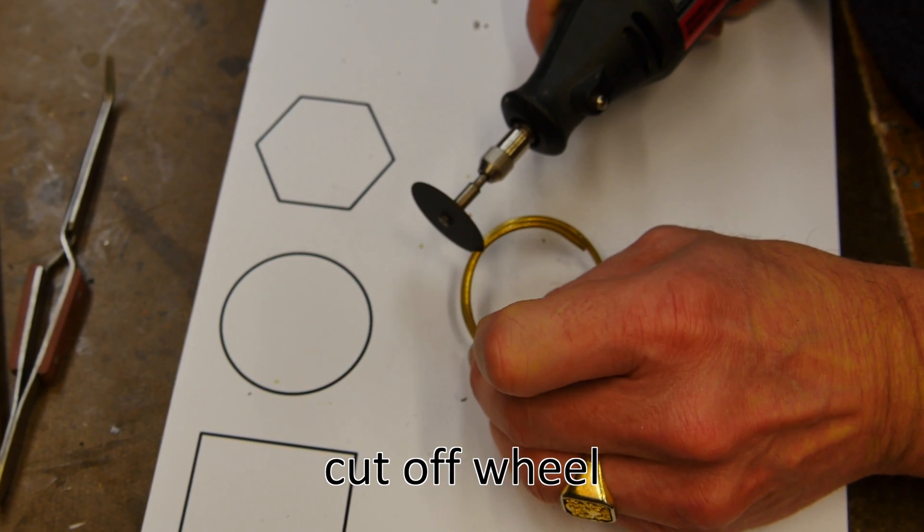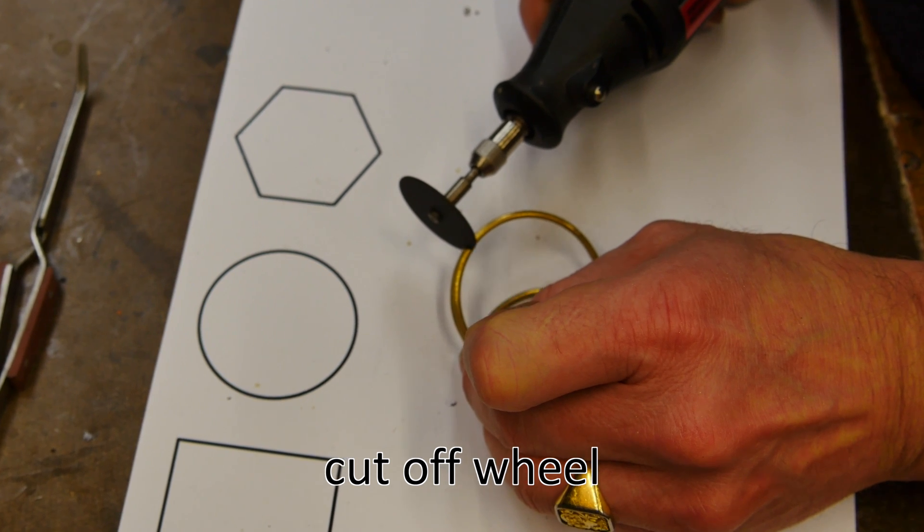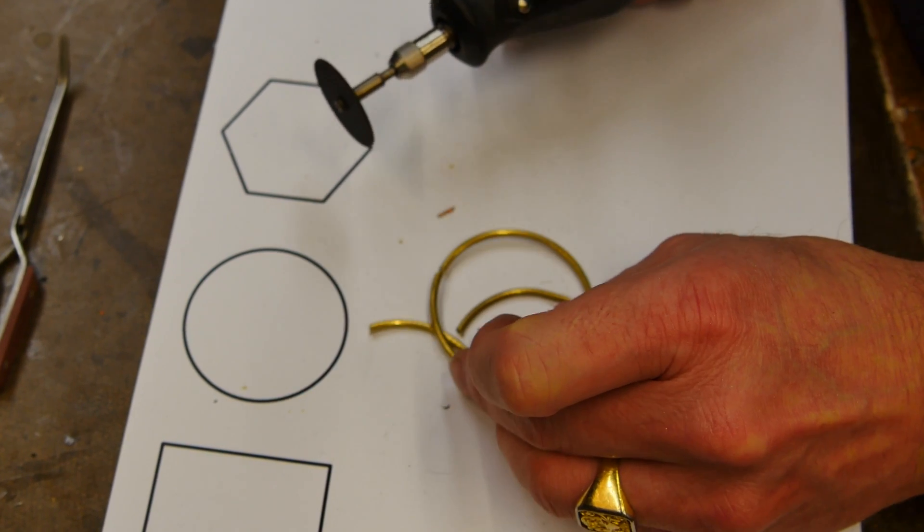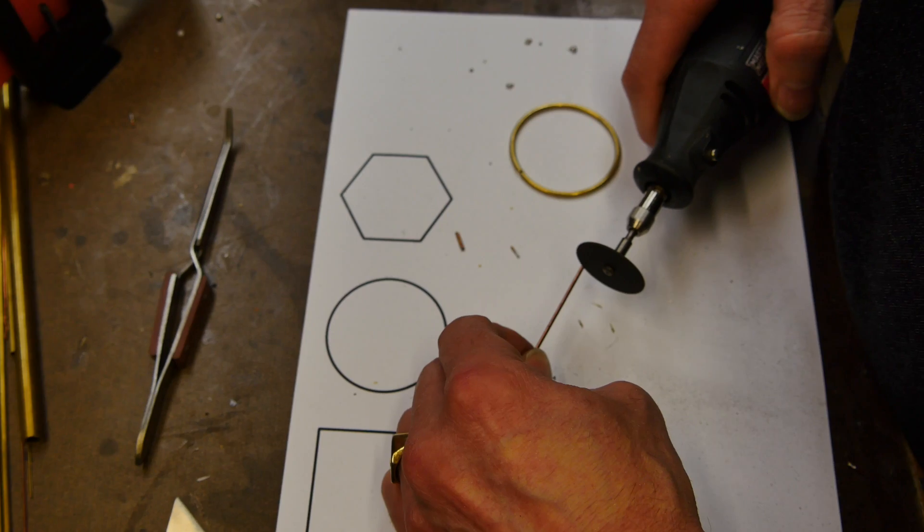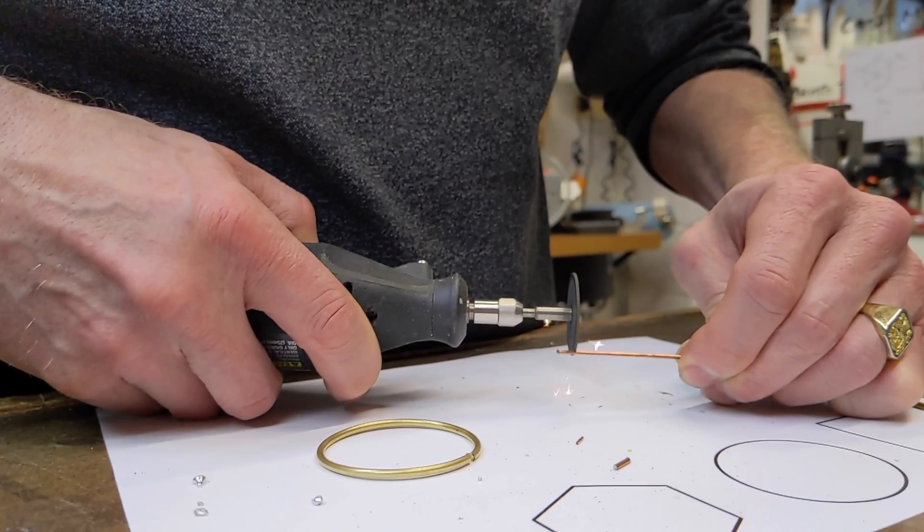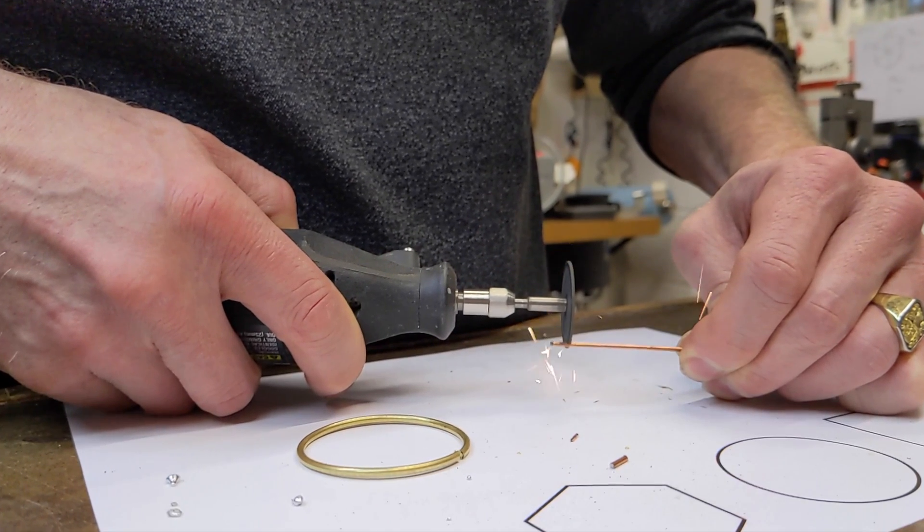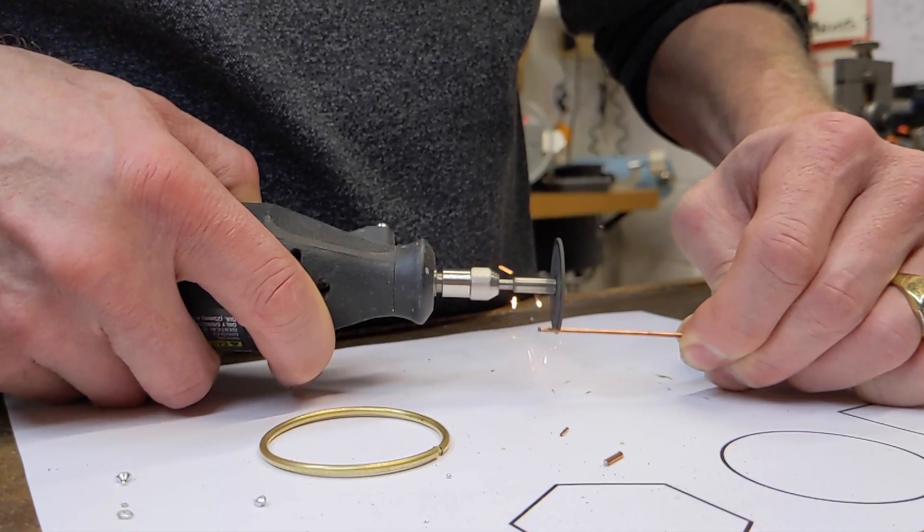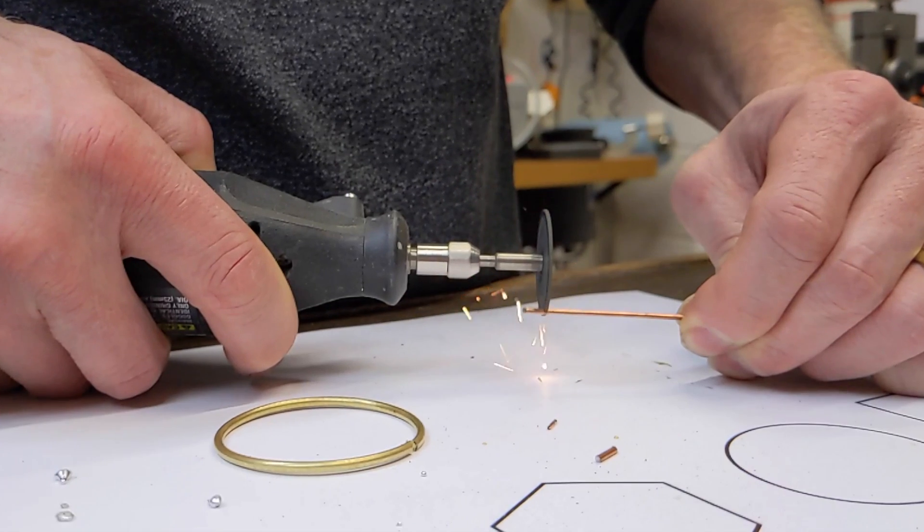Now the problem with this is that you basically get a gap and you have to bend the circle a little bit more.